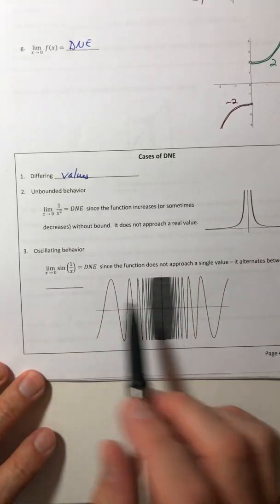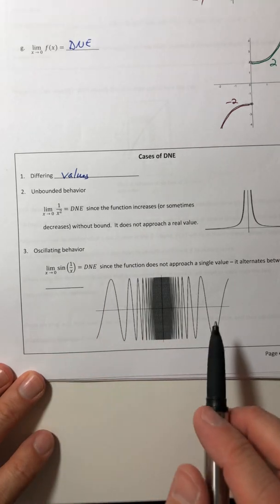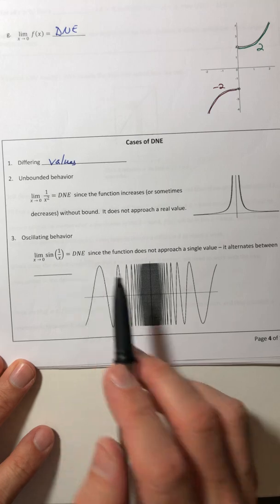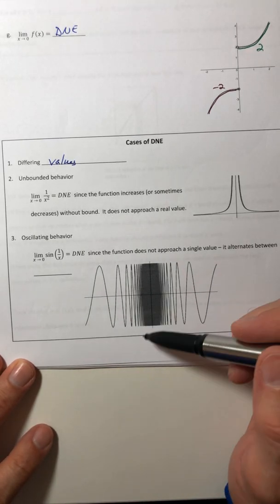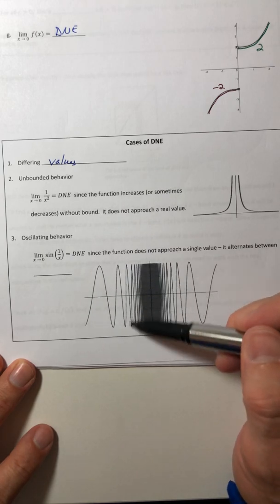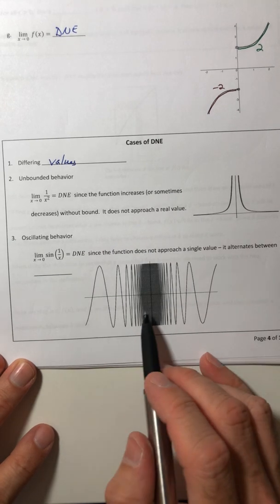And the third type is when it oscillates really, really fast. So like sine of one over X, as X approaches zero, it's also not existing because it doesn't approach a single value. So this curve, as you get closer and closer to X equals zero, it starts bouncing really, really fast.